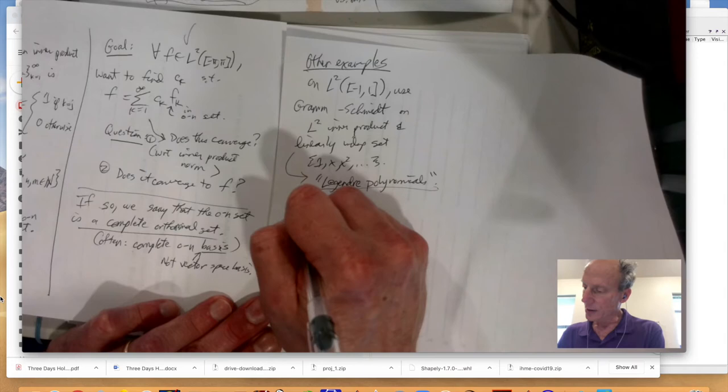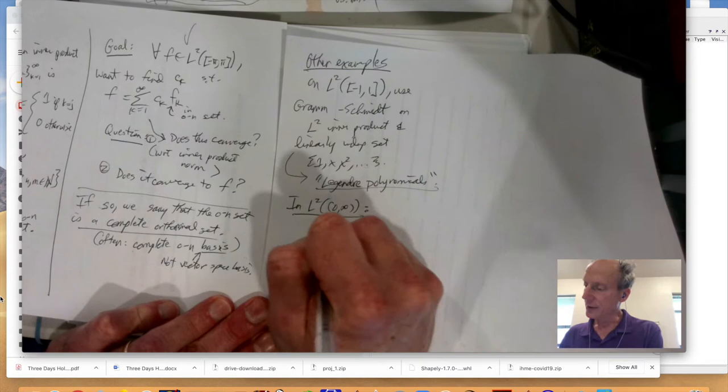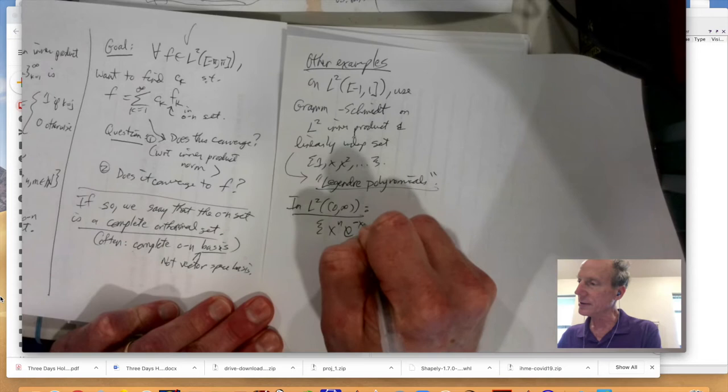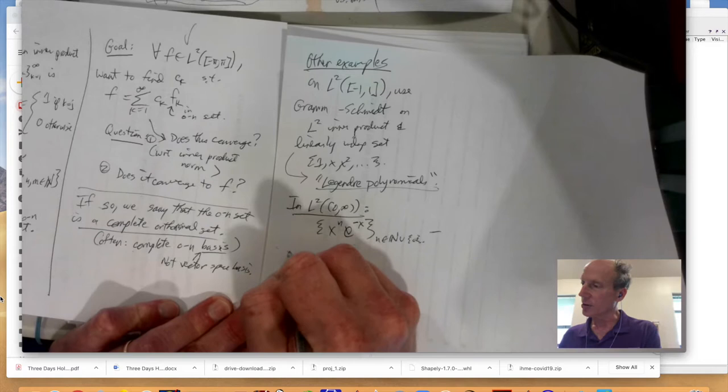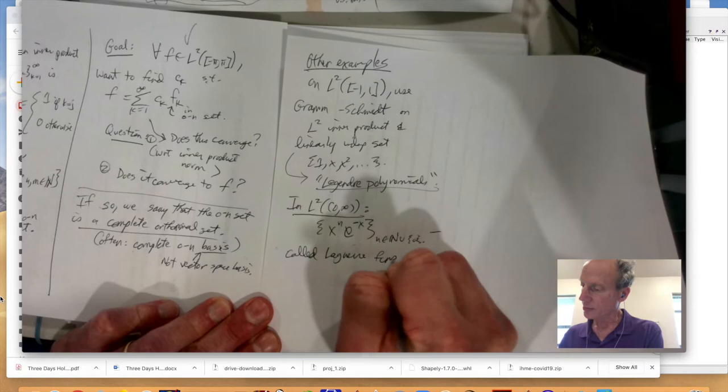And then in L2 of zero infinity, we have the set x to the n times e to the negative x. And this is for n in N, well, actually, union zero, I think. These are called the Laguerre functions.